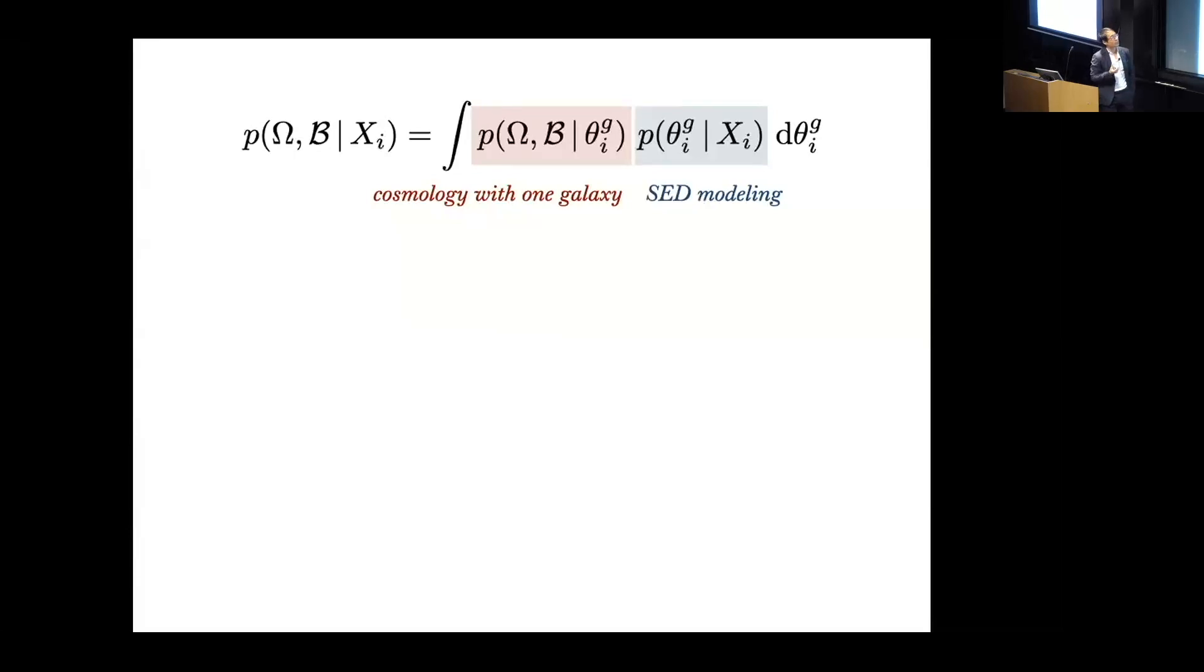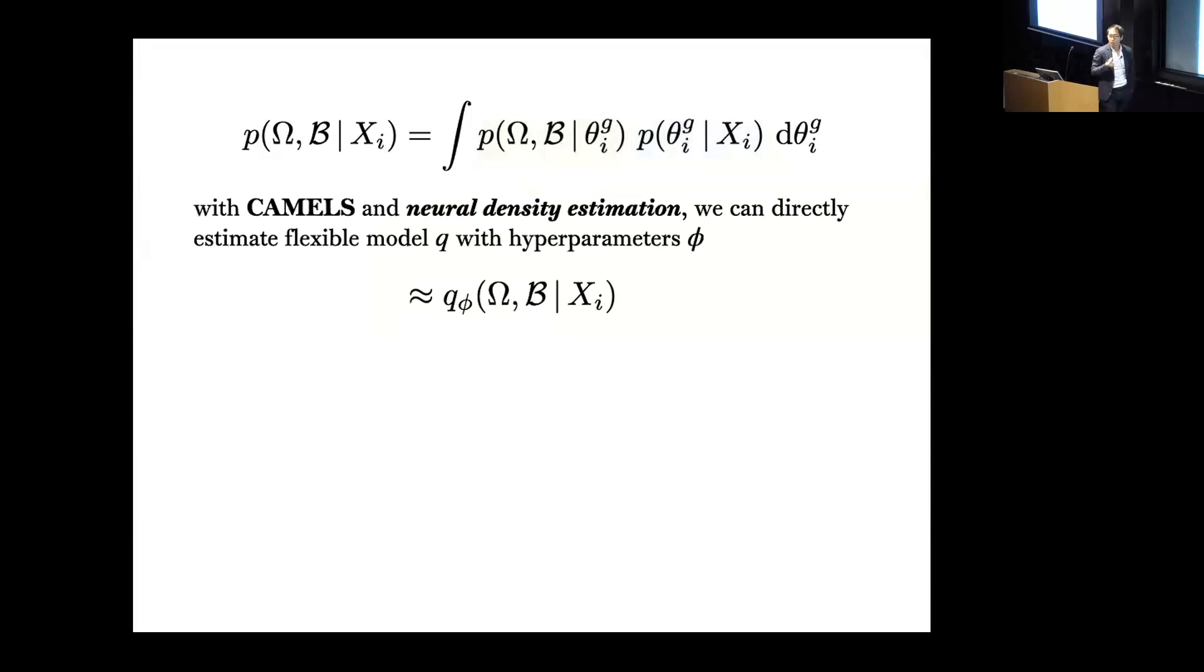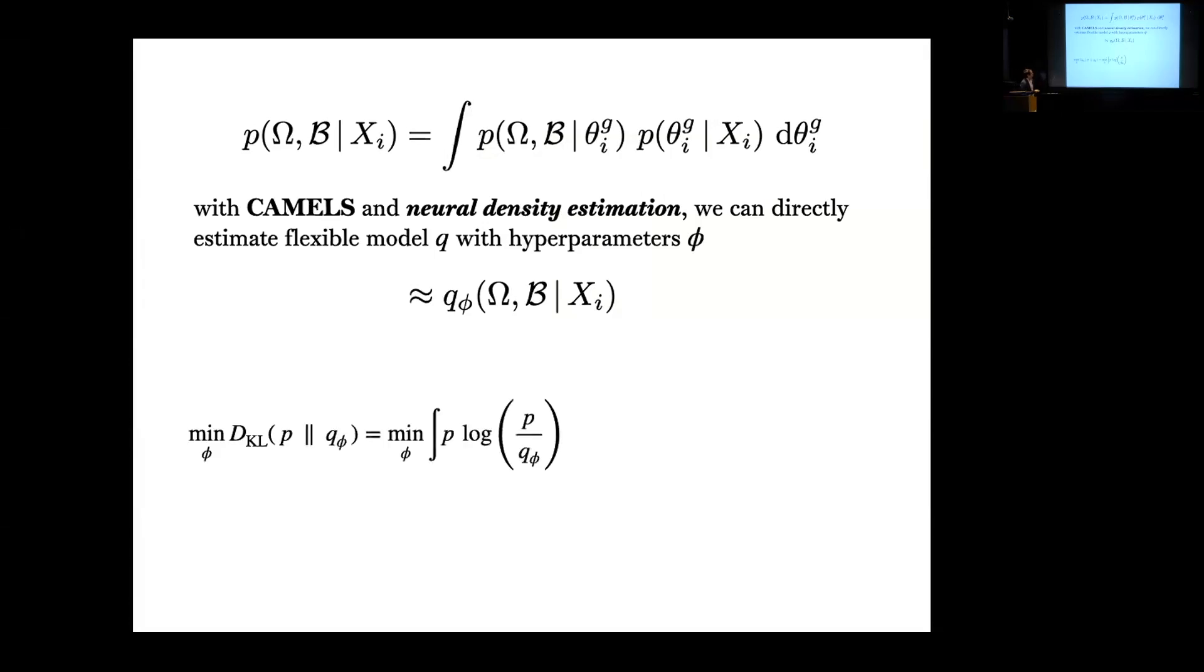If we focus on that expression, what I want to point out is that the first term is actually just the results from Paco's paper, which is Cosmology with One Galaxy, and the second term here is just the output of a typical SED modeling, the probability distribution of galaxy properties given some observable. In principle you can probably take the output from Paco's paper, take your favorite SED model posterior from that, and then try to evaluate this integral. But fortunately we have CAMELS and we have machine learning, we have neural density estimation, so we can do this much more directly. We can actually just estimate that posterior directly using some model q with hyperparameters phi.